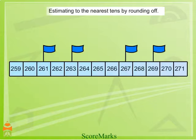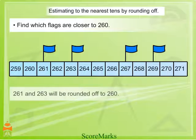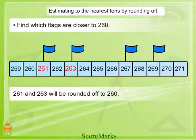Estimating to the nearest 10 by rounding off. Now look at this figure. Which flags are closer to 260? 261 and 263. Therefore, 261 and 263 will be rounded off to 260.